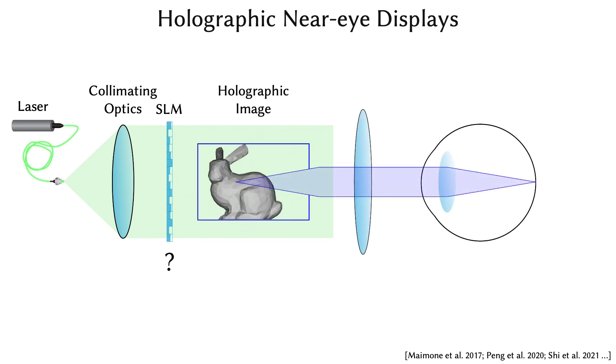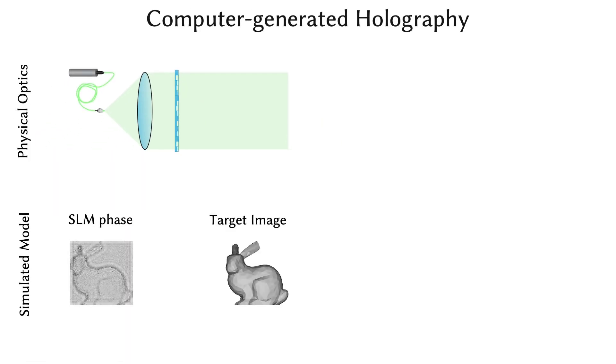How to compute the SLM pattern is one of the core challenges of computer-generated holography. To optimize a phase pattern for a given target image, computer-generated holography algorithms use a model of the wave propagation in this display, such as the angular spectrum method. An iterative solver uses this model to simulate the forward image formation and back-propagate the error with respect to a target image using its gradients.